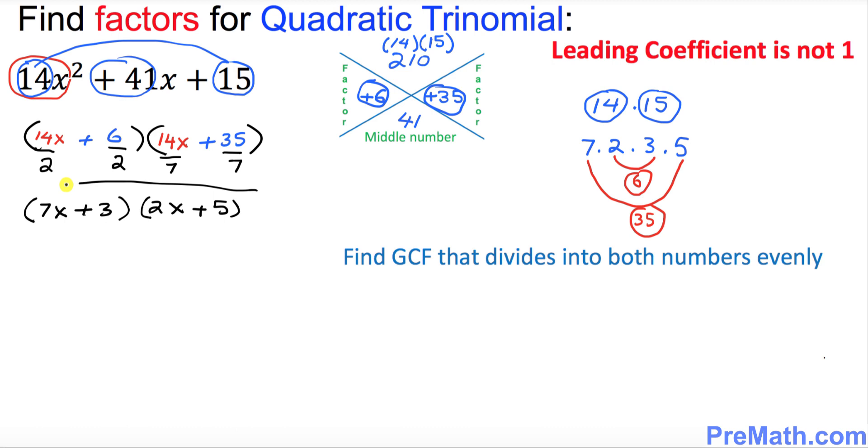So thus these are our factors. 7x plus 3 and 2x plus 5 are our factors for this given quadratic trinomial. Thanks for watching and please subscribe to my channel for more exciting videos.